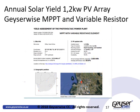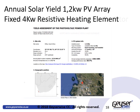Looking at the annual solar yield for a 1.2 kW PV array, the GizaWise MPPT with the variable resistor gives an annual energy output in the region of 2186 kWh. Compared to a fixed 4 kW resistive heating element, the annual output is 1561 kWh, and this will be even worse when using a 2 kW element on the same PV array.